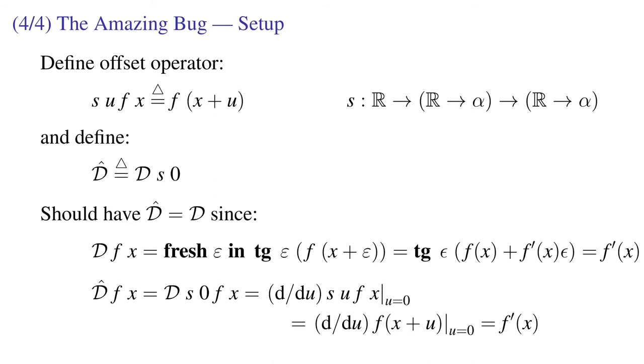Now I'm going to define d hat to be the derivative of s at the point zero. If we look at d of f at x, we expand things out, turn the crank, and we get f prime of x.